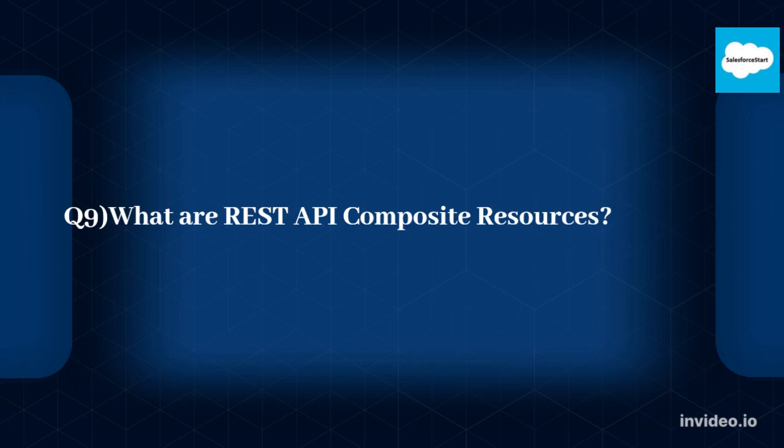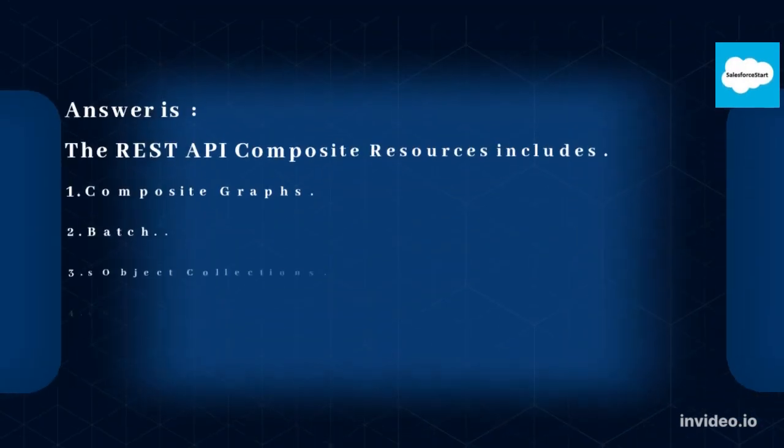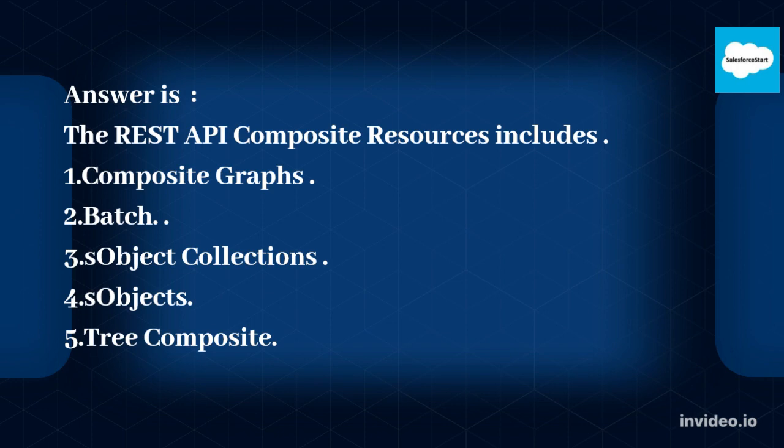Q9: What are REST API Composite Resources? The REST API Composite Resources include: 1. Composite Graphs, 2. Batch, 3. SObject Collections, 4. SObjects, 5. Composite.